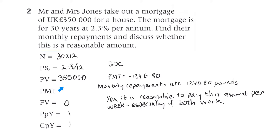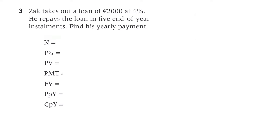The present value is 350,000 and we solve for the payment, which is negative because they are paying the bank. Their monthly repayments come out to 1,346.80. Yes, it is reasonable to pay this amount per month, especially if both partners work.